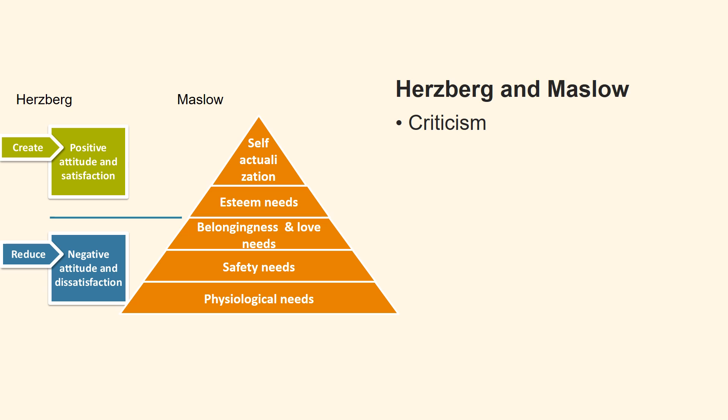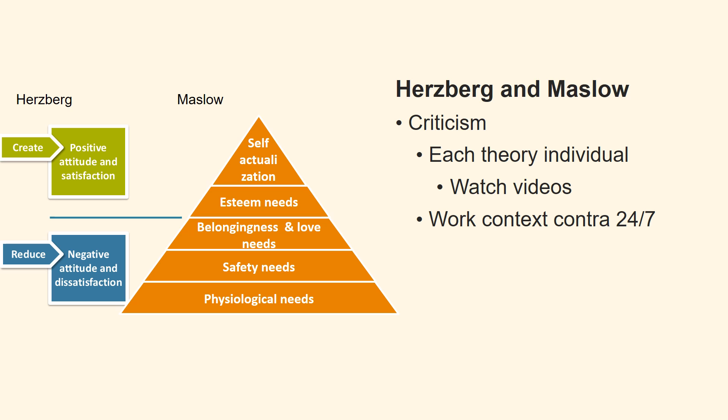Now we shall review a criticism of the integration of the two theories. In the videos dealing with Maslow's hierarchy of needs and Herzberg's two-factor theory, you can find the individual criticisms of the two theories. Herzberg only looks at the employee in a work context, while Maslow's hierarchy of needs deals with the individual 24-7. Herzberg is actually a subset of Maslow's hierarchy of needs.